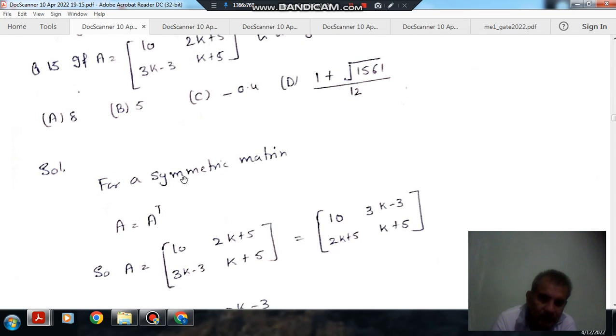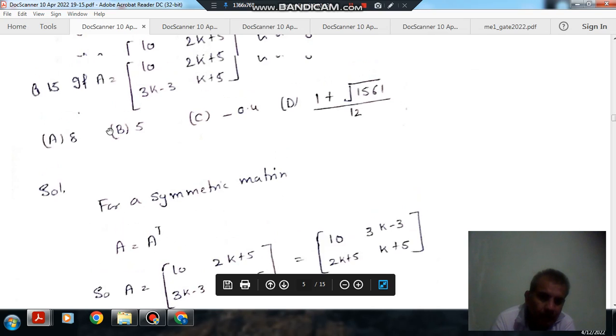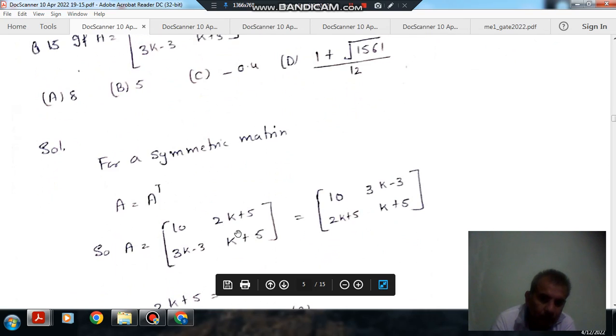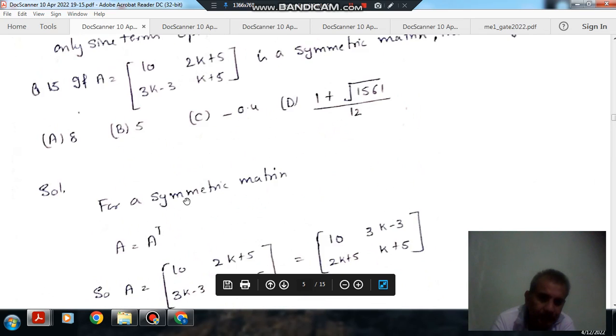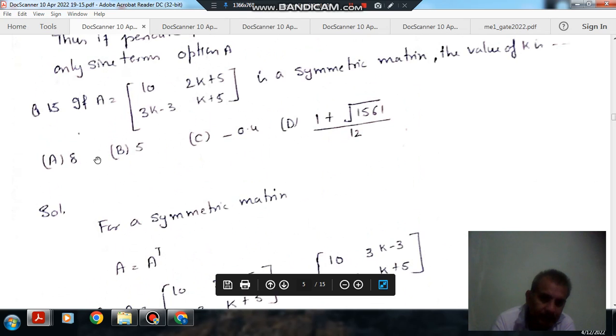So for symmetric matrix, the matrix and its transpose should be equal. The transpose of this matrix is 10, 3k minus 3, 2k plus 5, and k plus 7. So these two should be equal, and equating the elements, this 10 is equal to 10, so 2k plus 5 is equal to 3k minus 3, so k is 8. Option A is the right answer.